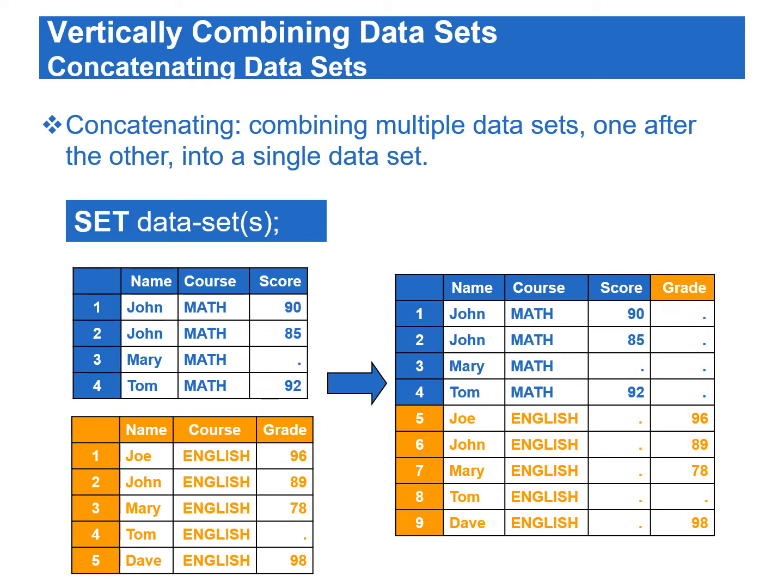When concatenating data sets, SAS reads all the observations from the first data set, then continues to read all the observations from the second data set, and so on. The number of observations in the combined data set is the sum of the observations from the input data sets.